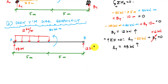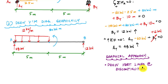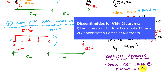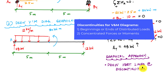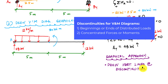Now, in order to do this graphically, there are only a couple of relationships and a process I like to follow. The process is identifying discontinuities — drawing vertical lines at discontinuities. Discontinuities are beginnings and ends of distributed loads, concentrated forces and moments, and any change in geometry or material of the cross section. In our case, most of them will be concentrated forces and moments and beginnings and ends of distributed loads.